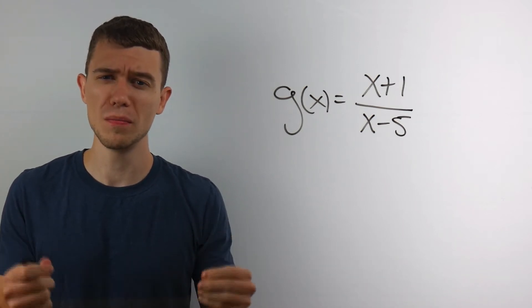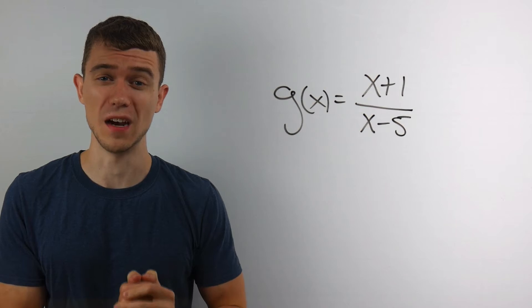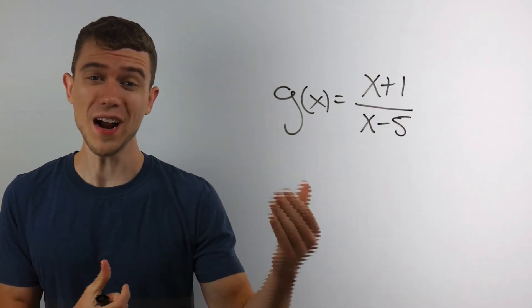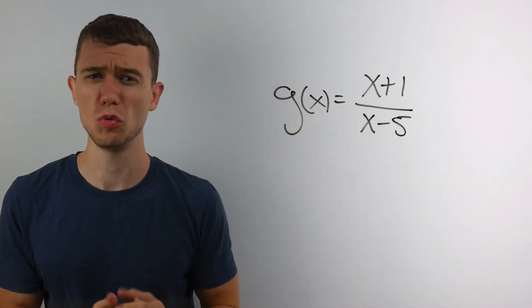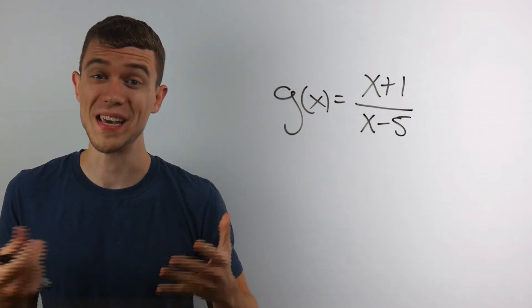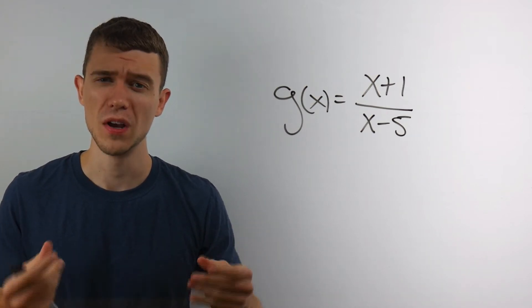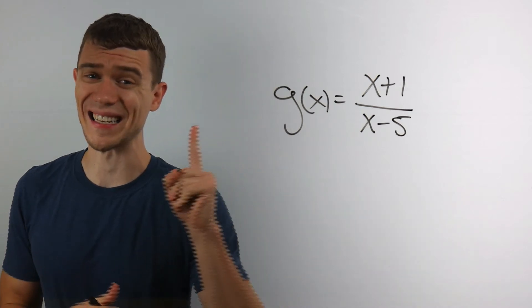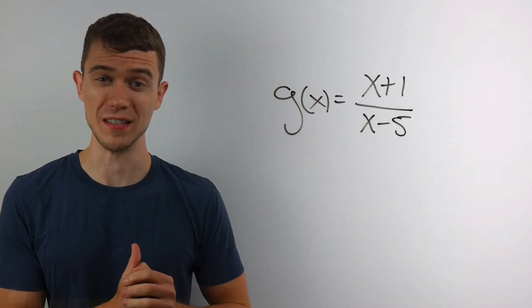Well, when you're looking for domain, you're looking for the bad places of a function. And since it's a fraction, what can't we do with fractions? Well, we can't divide by zero. So our domain will be everything except where we divide by zero.